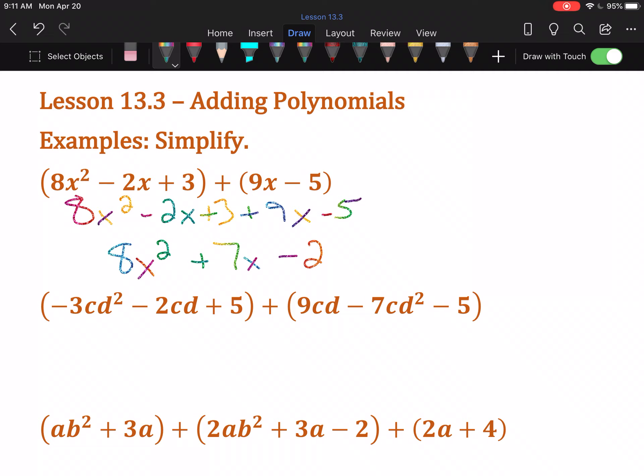I can just look and say, okay, I have cd squareds, I have cds, and I have numbers. So let's put them together. cd squareds first, because they have the most exponents. In the first set of parentheses, I have a -3cd². In the second set of parentheses, I have a -7cd². -3 and -7 combine to make -10, and those are cd squareds.